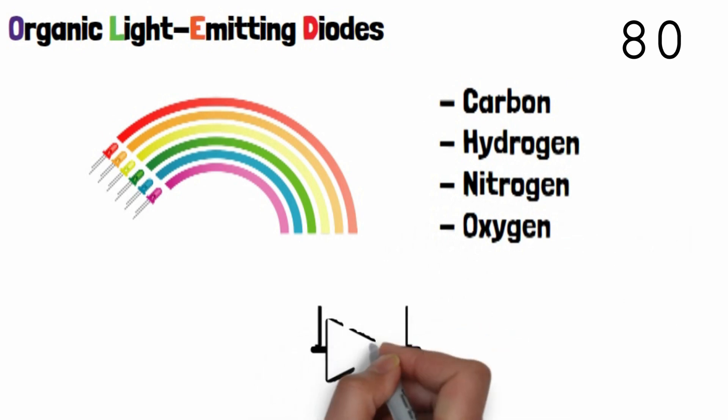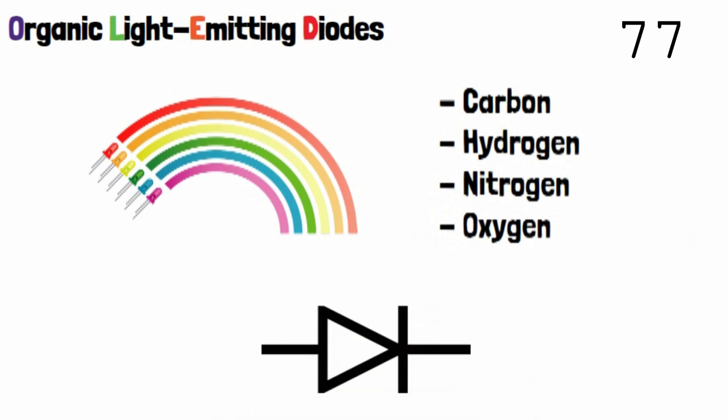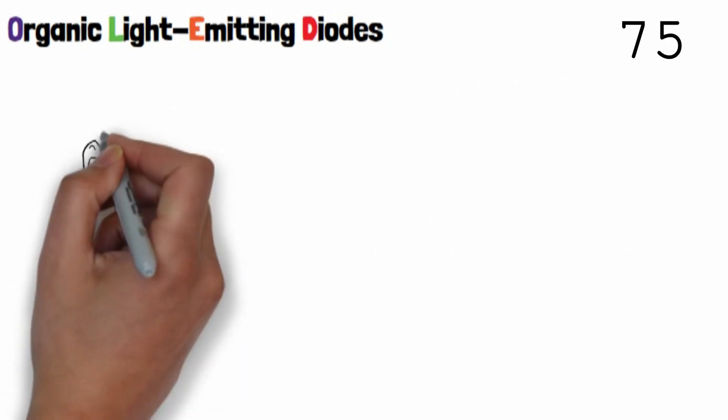A diode is an electronic component which allows the one-directional flow of electricity. However, how is an OLED made?